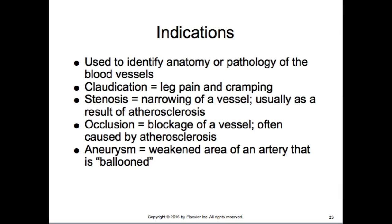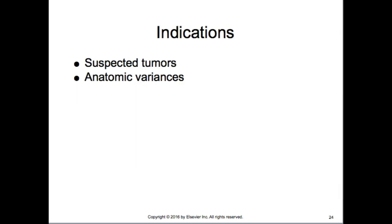Indications include identifying anatomy or pathology of blood vessels — claudication (leg pain or cramping), stenosis usually from atherosclerosis, complete occlusion of a vessel, aneurysm which is a weakening in the artery wall causing ballooning and risk of rupture. We also look for tumors and vascular malformations where vessels are all bundled together.